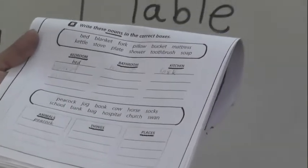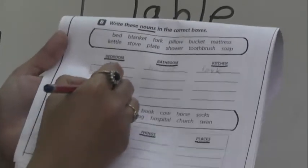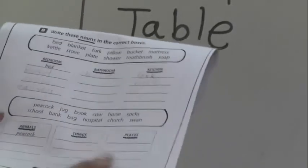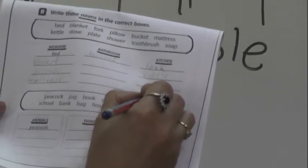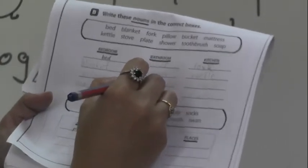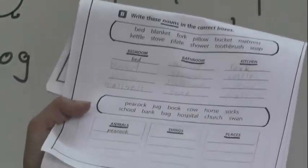Then mattress. Yes. Of course we are using in a bedroom during winter. Mattress. Then kettle. Yes. In the kitchen. Then stove. Yes. In a kitchen. Stove. Then plate. In a kitchen. Then shower. Of course in a bathroom. Shower. In a bathroom. Then toothbrush and soap. Right in a bathroom column. Tooth, brush. And the last is soap. Have you understood this?